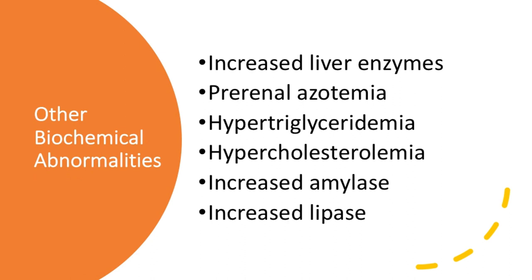Other biochemical abnormalities seen in DKA include increased liver enzymes, usually a pre-renal azotemia due to dehydration, and due to the lack of insulin, hypertriglyceridemia and hypercholesterolemia. Sometimes there is an increased amylase and lipase, depending on whether you have coexisting pancreatitis.